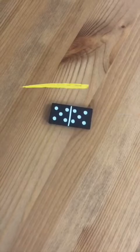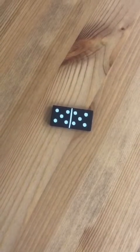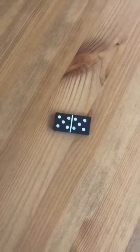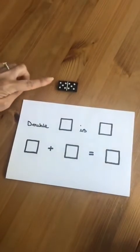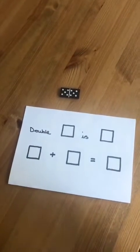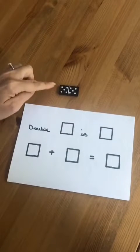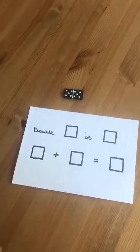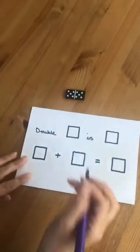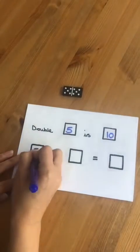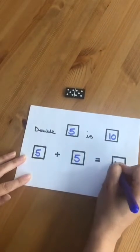Now I have a domino here representing a double. Can you think of the addition sentence? Let's have a look together. We've got five on this side and five on that side. How many do we have altogether? One, two, three, four, five, six, seven, eight, nine, ten. Double five is ten because five plus five makes ten.